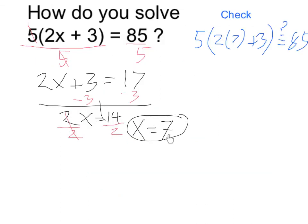Let's end with a quick check. We can take the 7, plug that into the original, and see if that is in fact equal to 85. Starting inside the parentheses, 2 times 7 is 14,